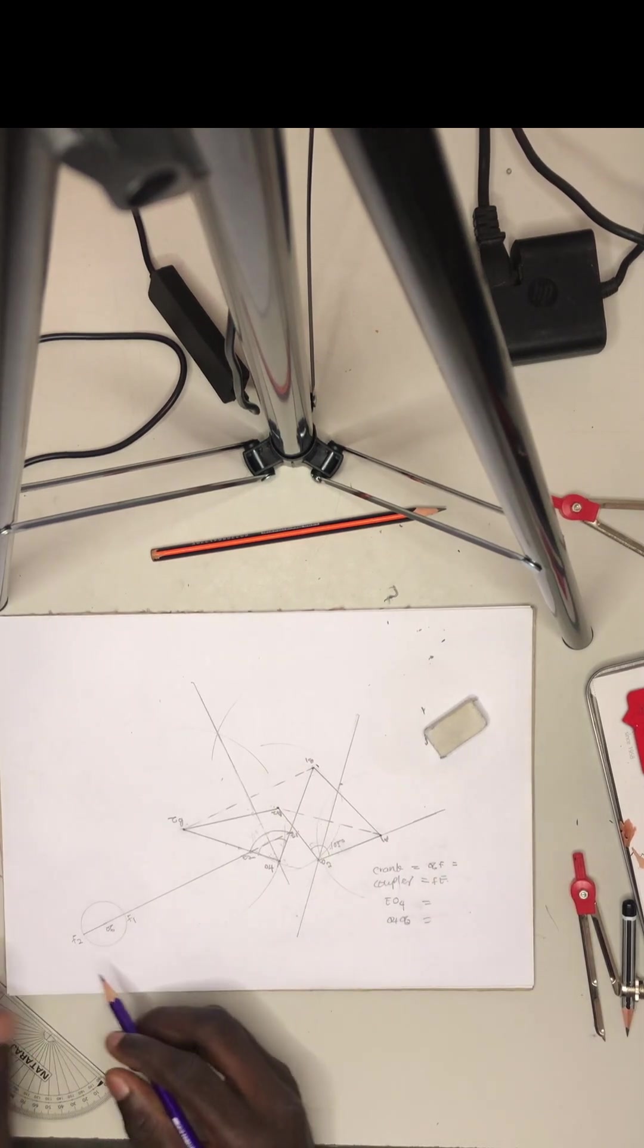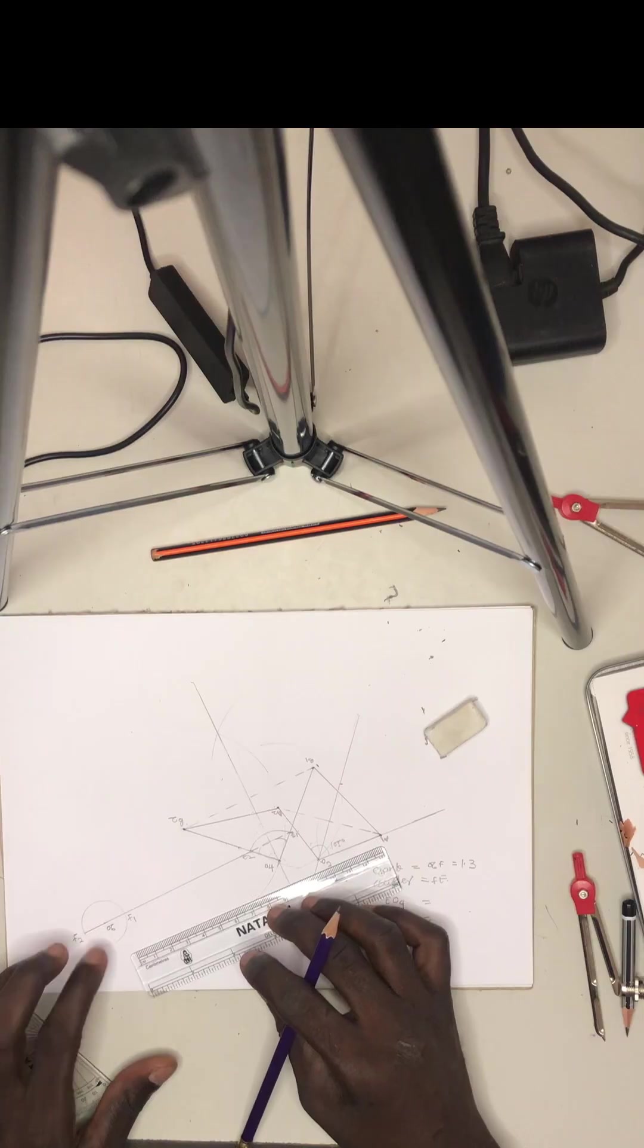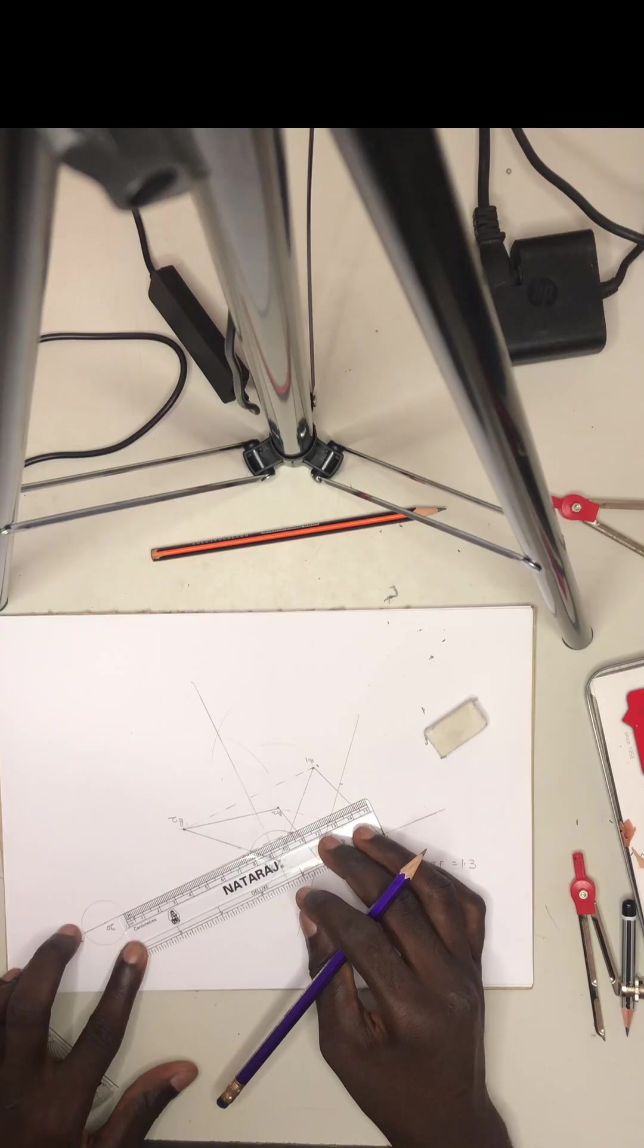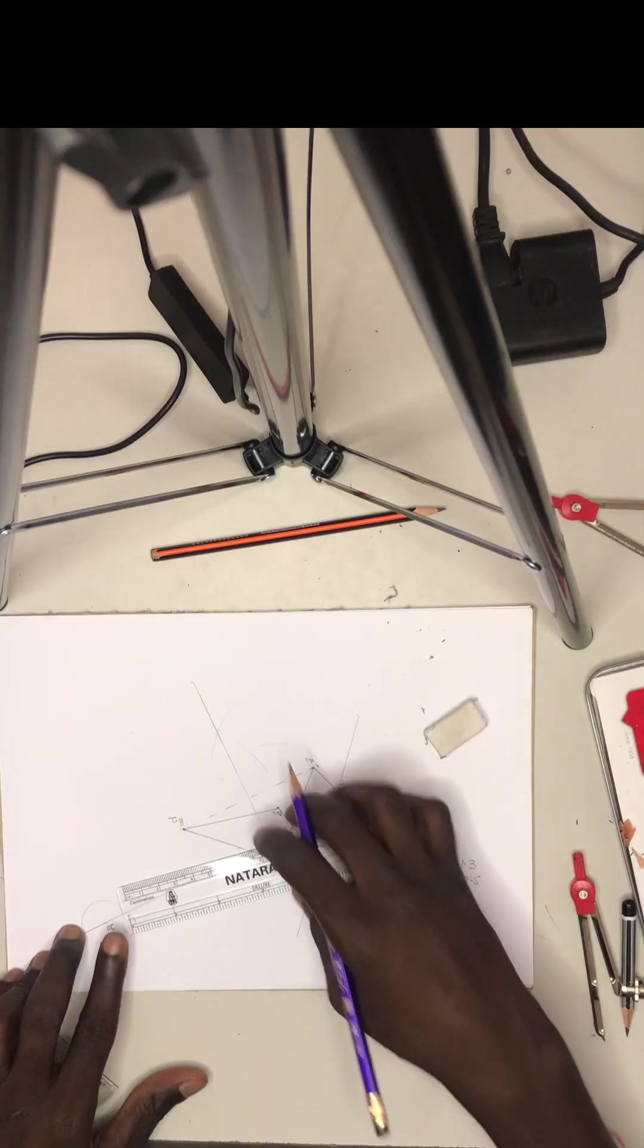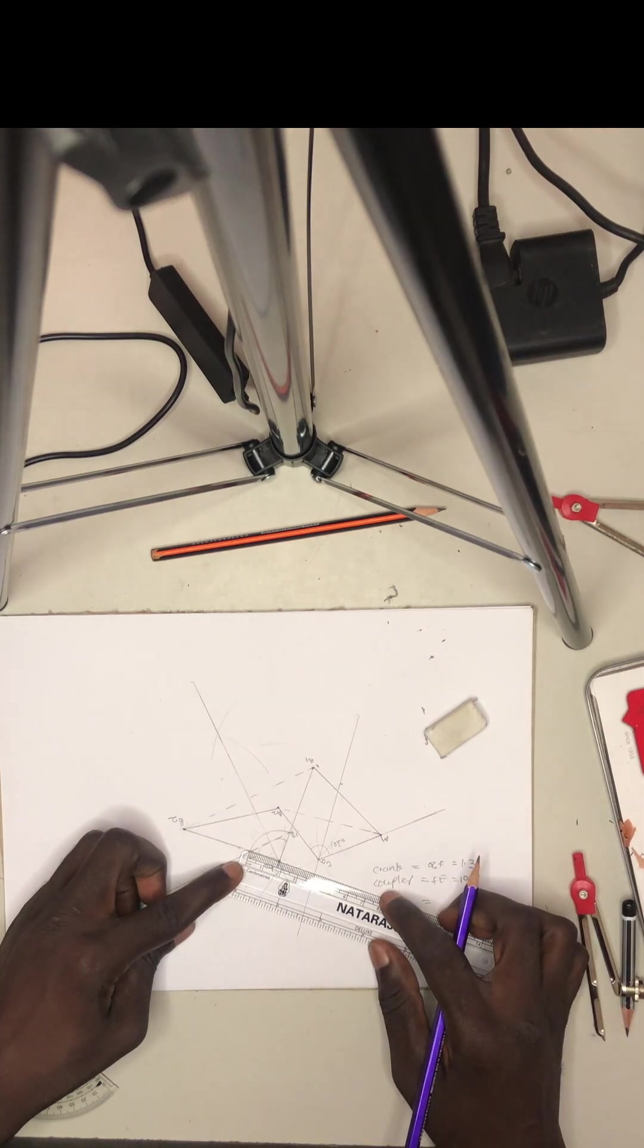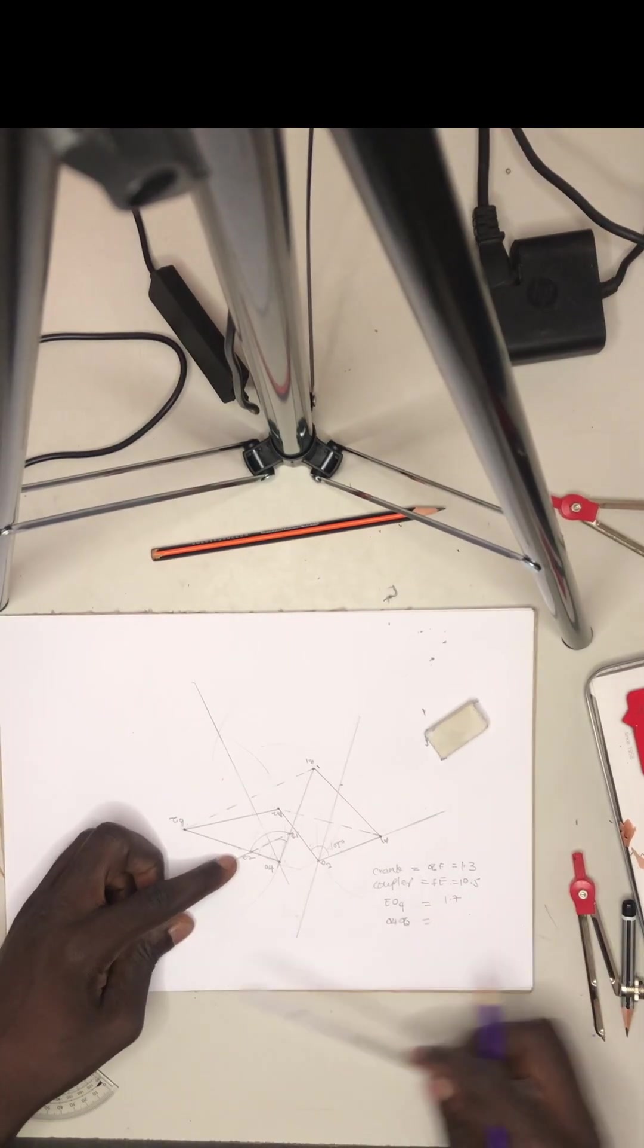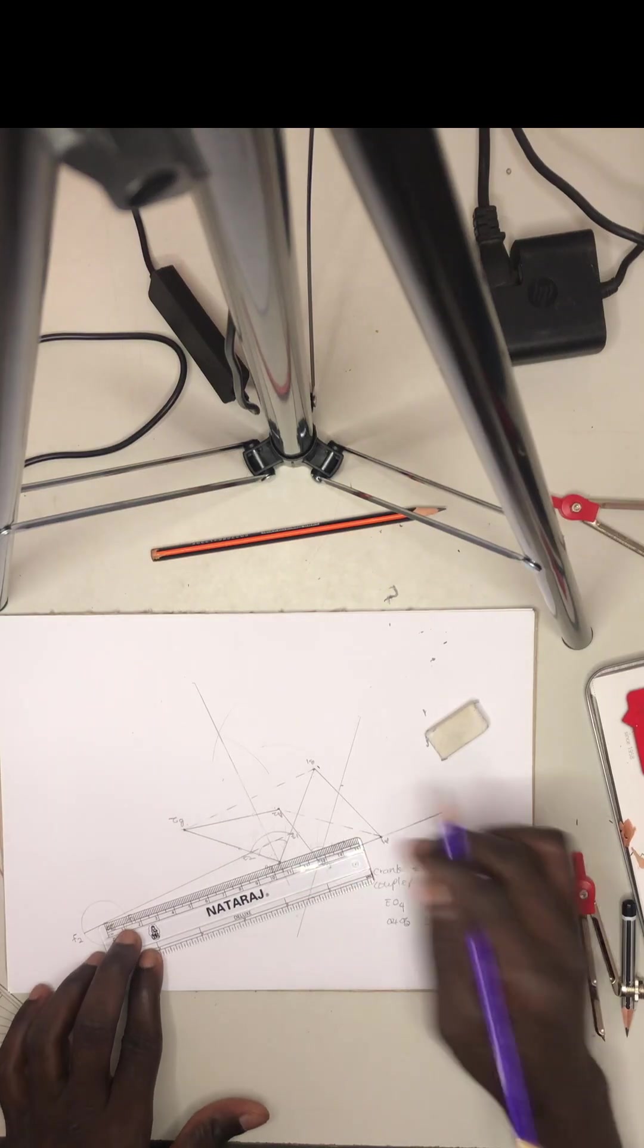For O6F, which is the crank length, we have 1.3. The coupler length which is EF, either F1, E1 or F2, E2, I have 10.5. Then EO4, from here to here, either E1, E4 or E2, E4, that also I have 1.7. And then the grounds between O4, O6, that is 10.5.